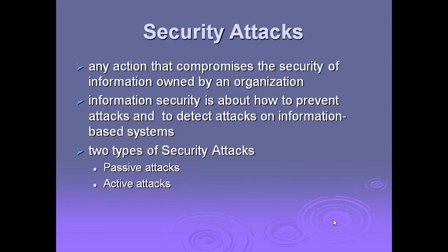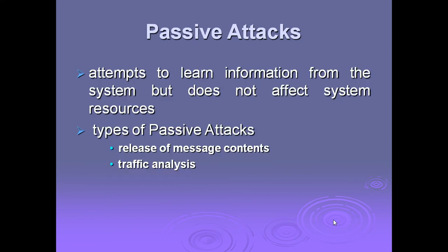Information security is about how to prevent attacks and to detect attacks on information-based systems. There are two types of security attacks: passive attacks and active attacks. Passive attacks attempt to learn information from the system but do not affect system resources. There are two types of passive attacks: the first one is release of message contents.